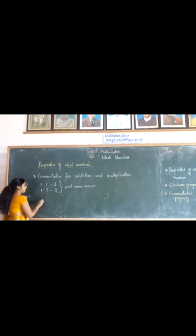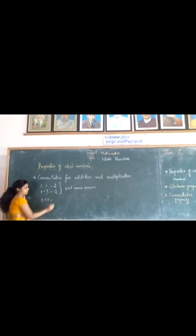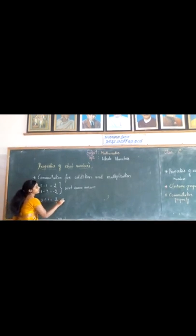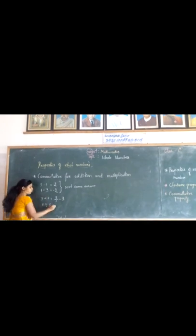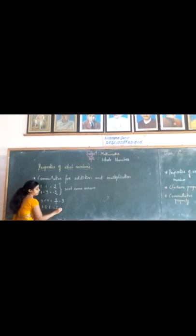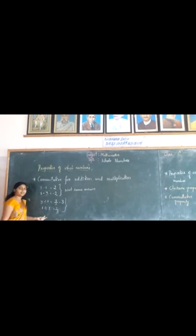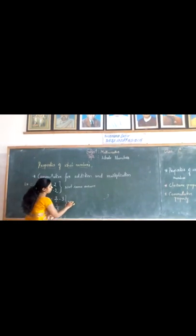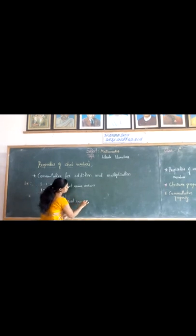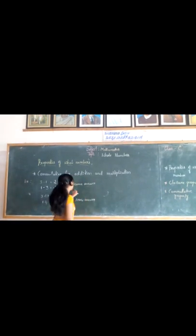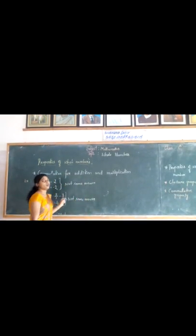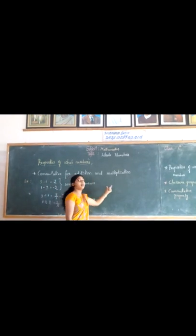Now let us apply it to division. 3 divided by 1, what do we get? 3 divided by 1 is 3. Now the order of the numbers is changed: 1 divided by 3, what do we get? 1 divided by 3. Here we do not get the same answer. So we conclude that commutative property holds only for addition and multiplication, not for subtraction and division.